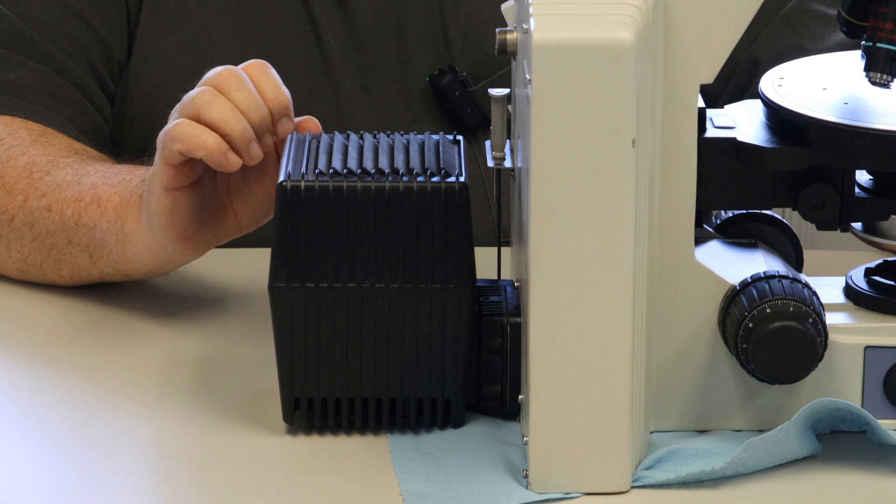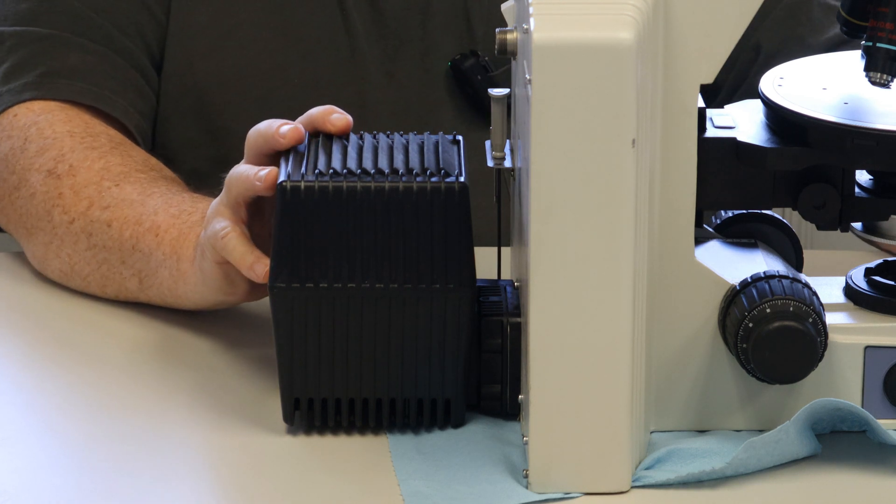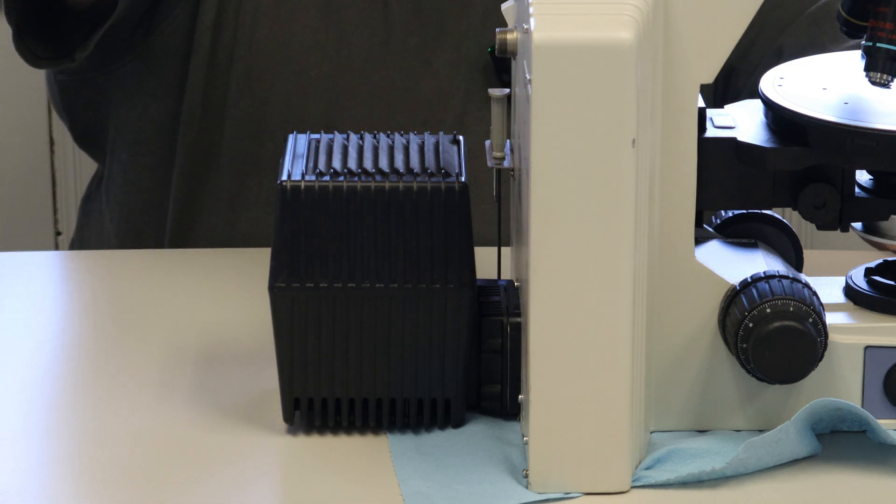Have your scope turned around. This is your main lamp housing. If you actually have an epi set up, you'll have another lamp housing up here.